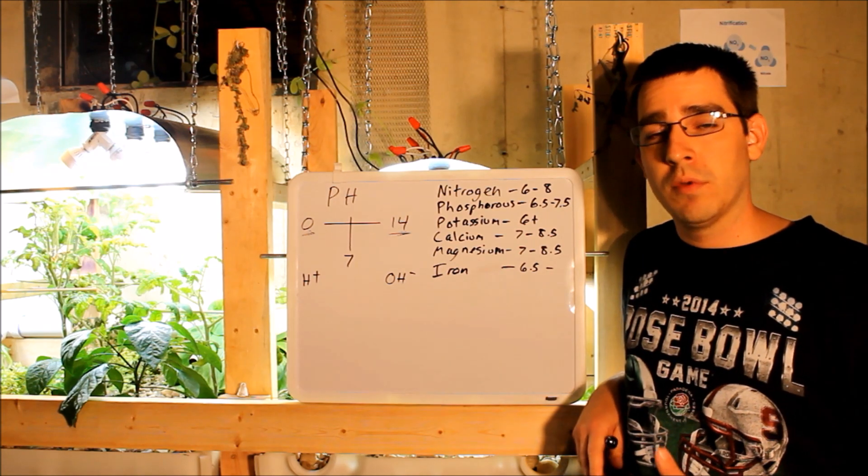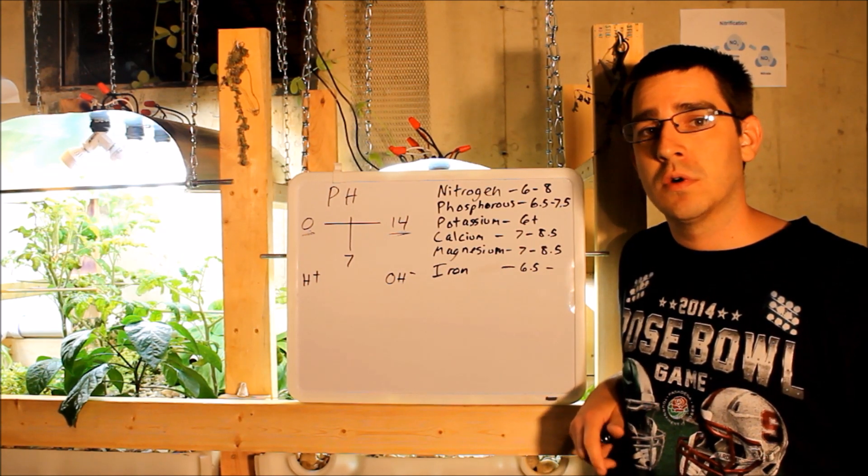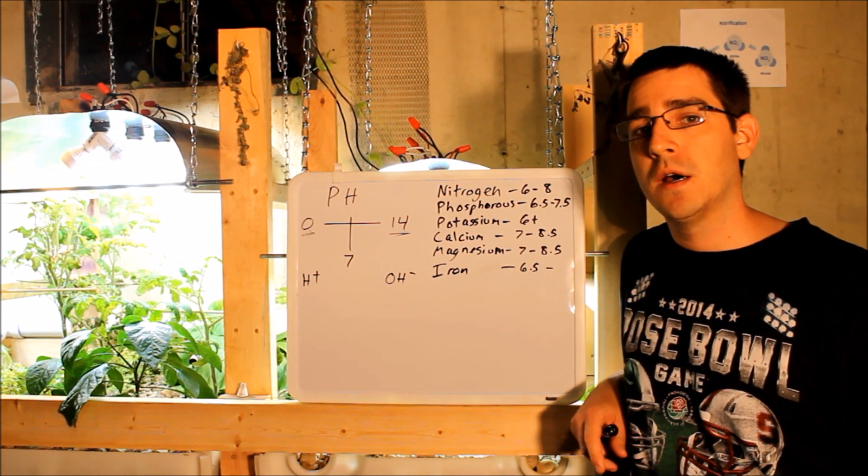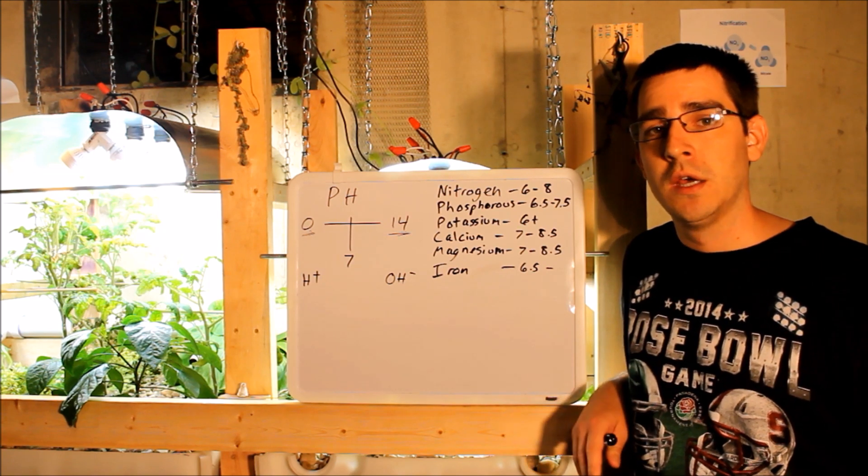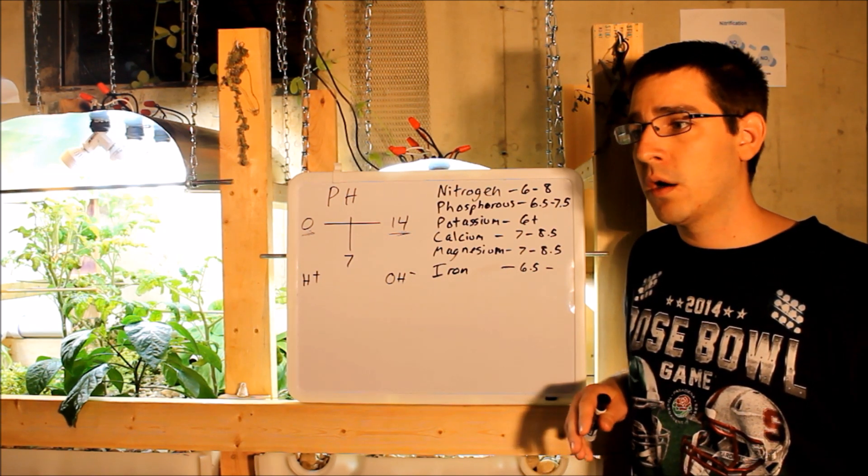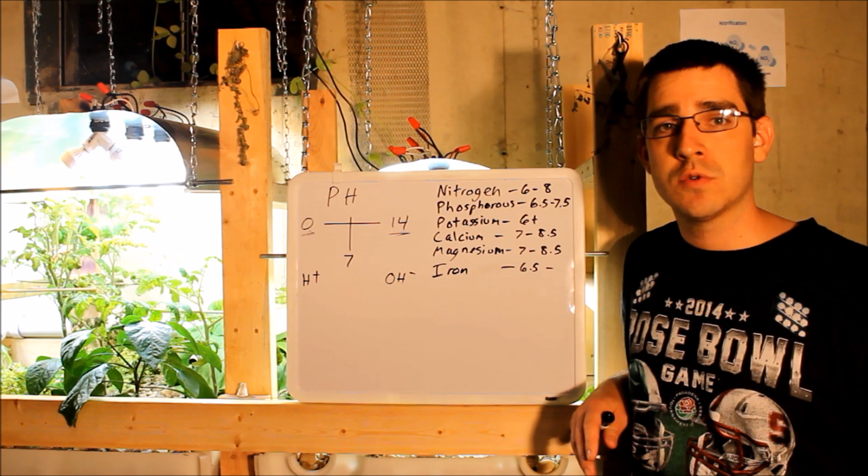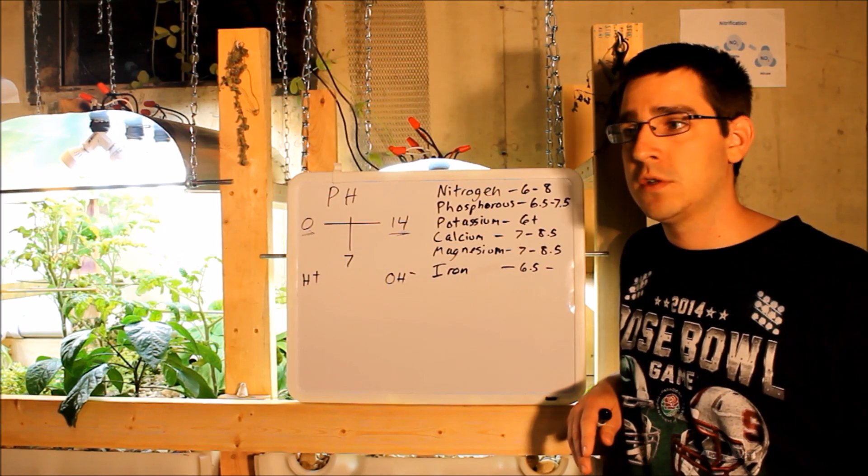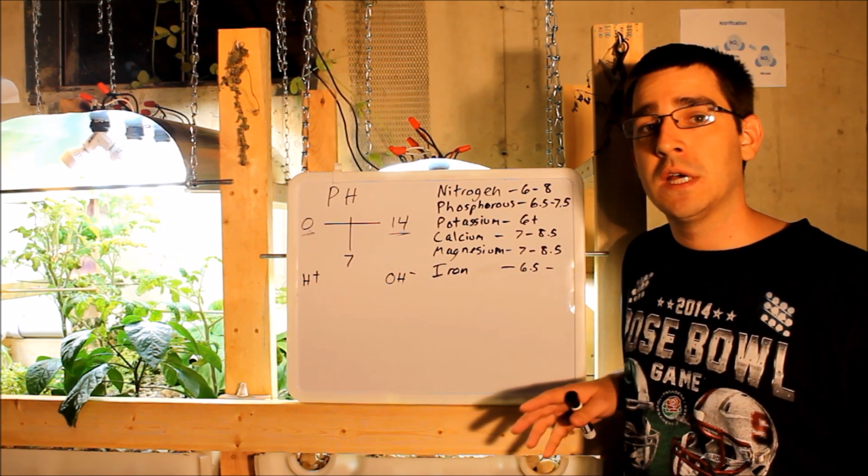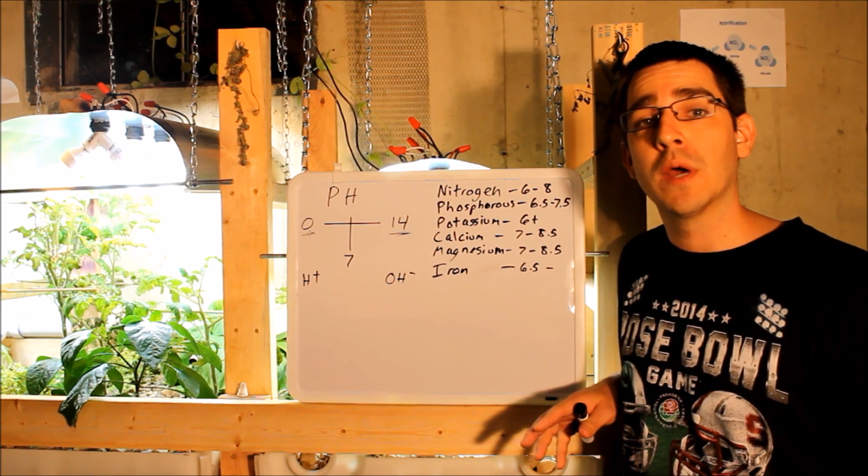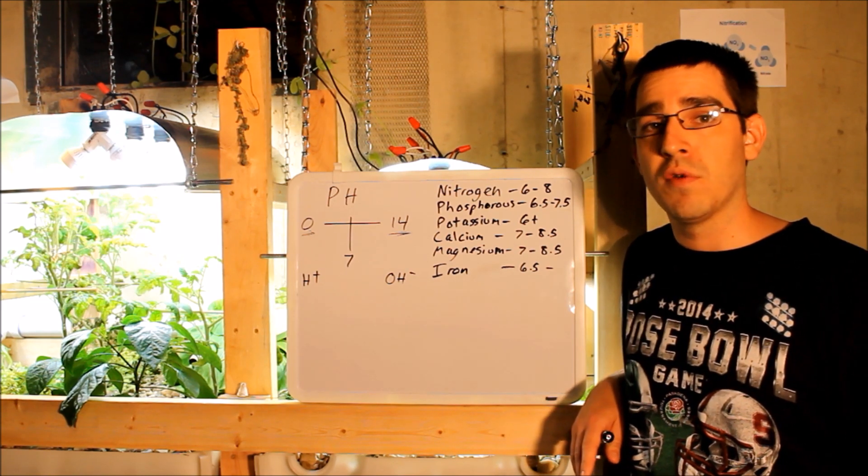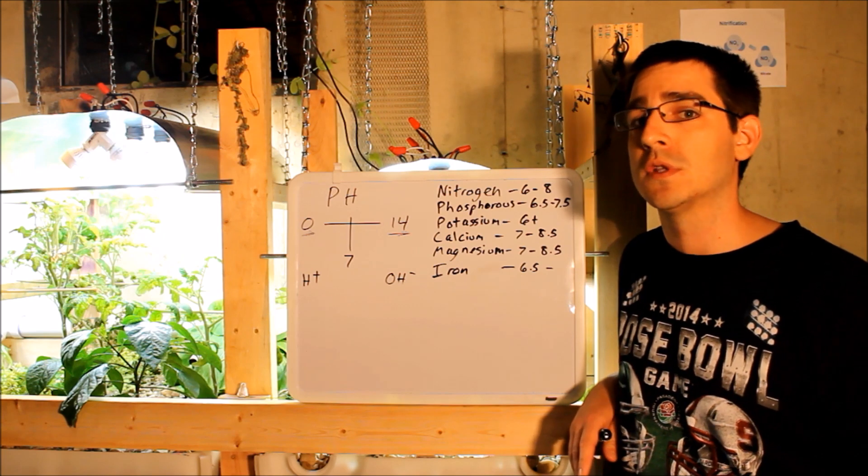Whether you're working with aquaponics or hydroponics or growing a garden outside, pH is important to you in some way. Plants require a certain level of pH. Some plants require lower pH levels, some plants like higher pH levels, and it's important to find that sweet spot depending on what you're growing so that your plants can grow the fastest and produce the best vegetables.